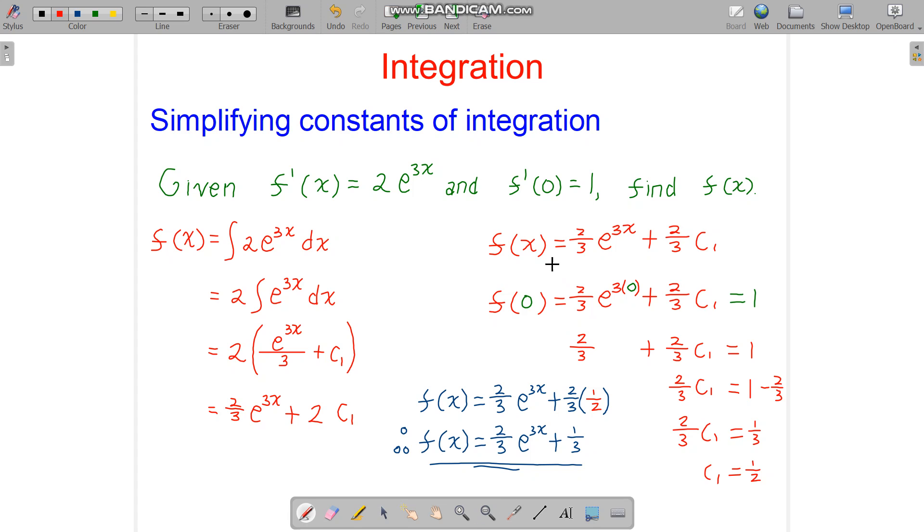So we can just rewrite here. This is exactly the same, supposed to be exactly the same: 2/3 e to the power of 3x plus, I mean just 2, 2c1.